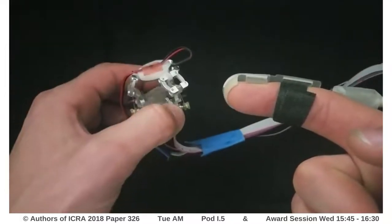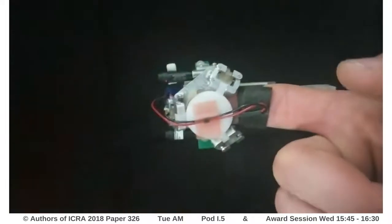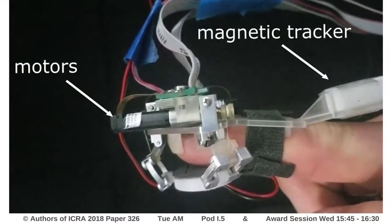These devices are easily donned and doffed and use a magnetic tracker to measure both finger position and orientation in space. The bias spring tether transmission allows the motors to be placed on the back side of the finger.